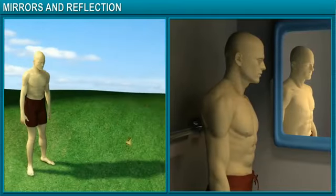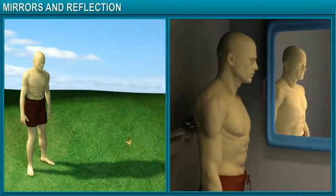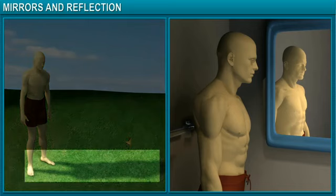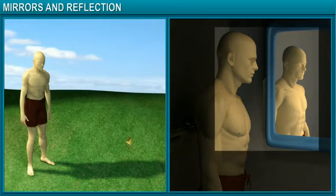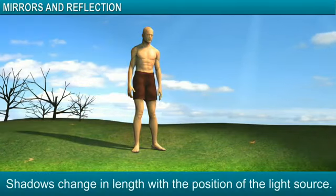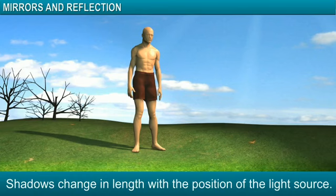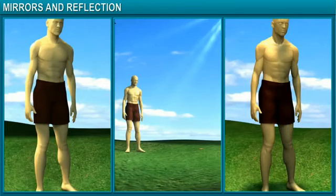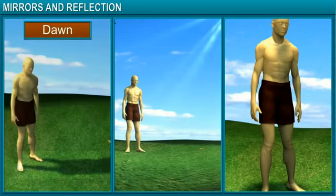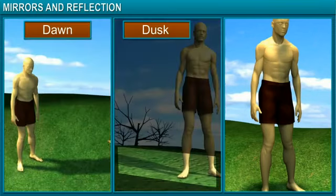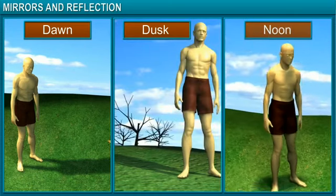Neither shadows nor images can exist without light, but there are some distinct differences between them. For example, your shadow is always black, whereas your image is in color. Shadows change in length with the position of the light source — your shadow changes in length with time as the position of the sun changes during a day. Your shadow will be longest at dawn or early morning and at dusk or early evening.